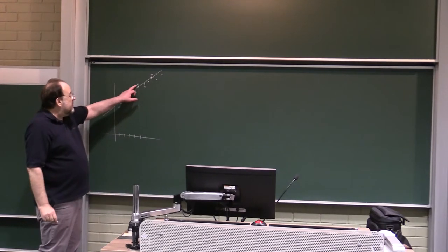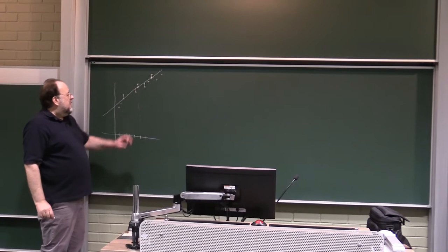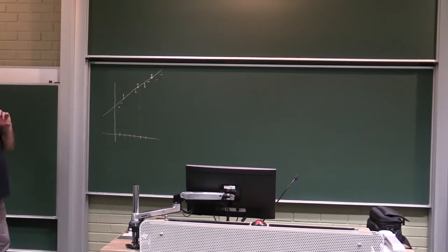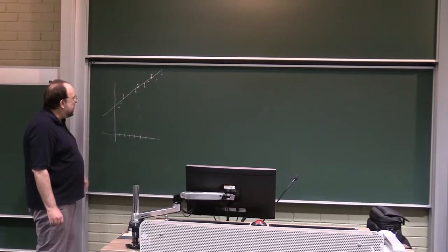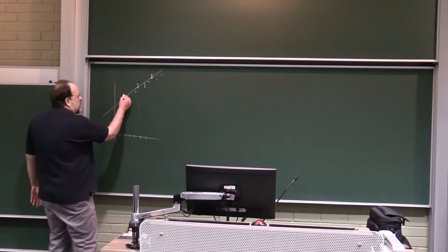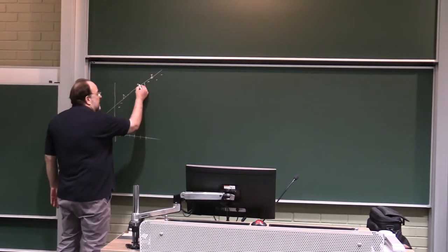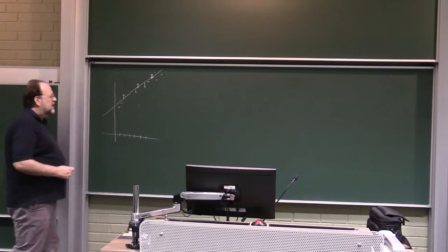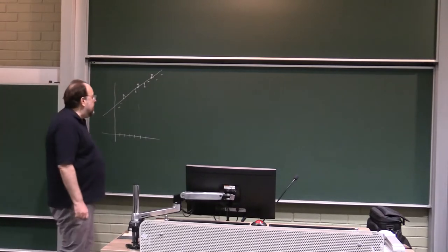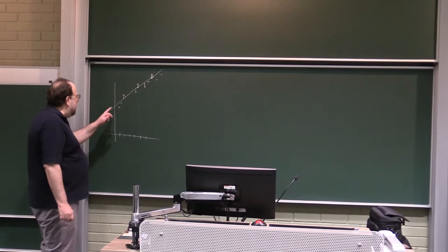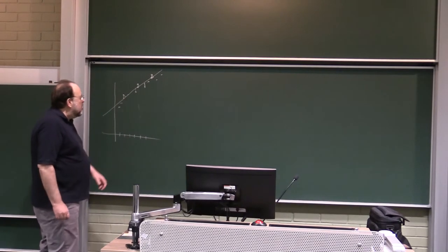You want the sum of the squares of these differences to be as small as possible. A slight variant of this is when you look at the sum of the squares of the distances to the line. This is sometimes called total least squares.